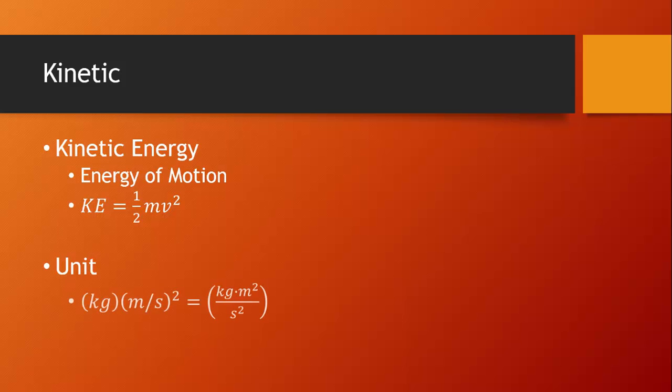Let's take a look at the units. If we take a kilogram and multiply it by the square of a meter per second, we end up with kilogram meter squared per second squared. This looks similar to some other units we've seen this year, but it's different. We have a special name for this unit. It's called a joule.